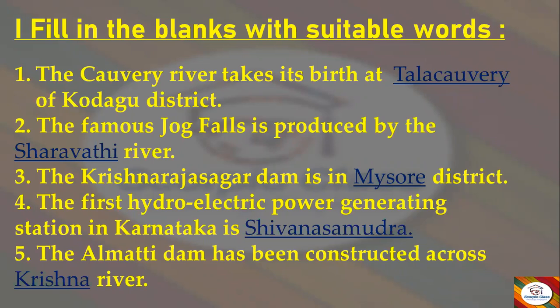Question 3: The Krishna Rajasagar Dam is in _____ district. Answer: Mysuru. Question 4: The first hydroelectric power generating station in Karnataka is _____. Answer: Shivanasamudra. Question 5: The Almatti Dam has been constructed across the _____ river. Answer: Krishna.